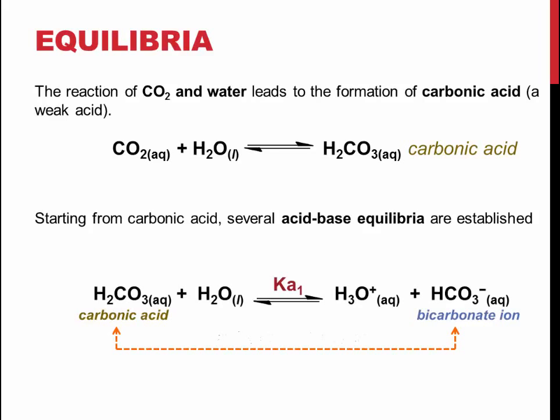Working from carbonic acid, it can lose a proton and form the hydronium ion and bicarbonate ions. The equilibrium constant for this reaction is called Ka, as a conjugate acid-base pair is involved. Carbonic acid is the acid, and bicarbonate is its conjugate base.